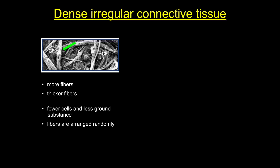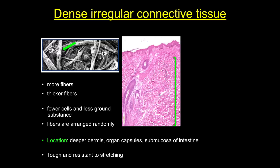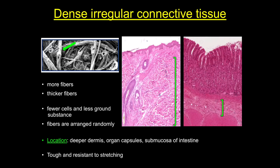Next, we'll look at dense irregular connective tissue. As seen in the electron micrograph, this tissue has more fibers, and these fibers are thicker than in loose connective tissue, making it tough and resistant to stretching. There are also fewer cells. The hallmark of dense irregular connective tissue is that the fibers are arranged randomly. You'll find it in the deeper dermal layer of skin, as protective capsules surrounding organs, and in the submucosal layer of the digestive organs. Note the almost rope-like arrangement of the fibers and the relative lack of cells. The transition from loose to dense irregular connective tissue can often be arbitrary.